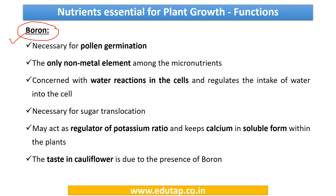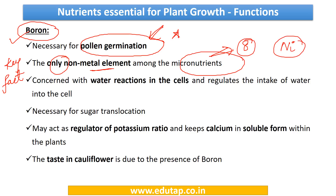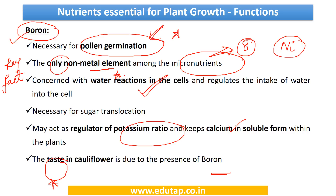Boron is necessary for pollen germination — this is very important, kindly memorize this. One important key fact: boron is the only non-metal element among the micronutrients. There are eight micronutrients, with nickel being the latest to be added, and among those eight, boron is the only non-metal element. Boron is concerned with water reactions in the cell, may act as a regulator of potassium ratio, and keeps calcium in soluble form. Also, the taste in cauliflower is due to the presence of boron.